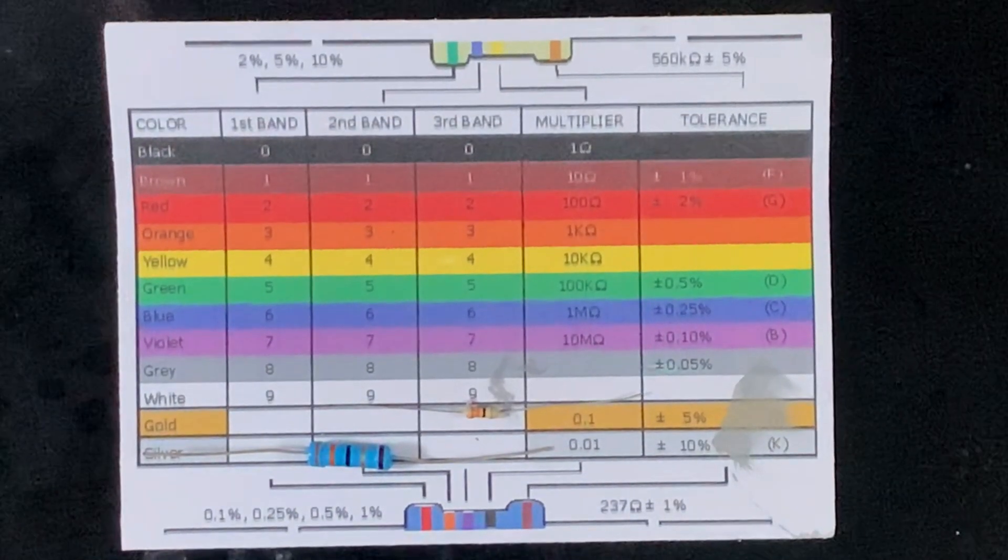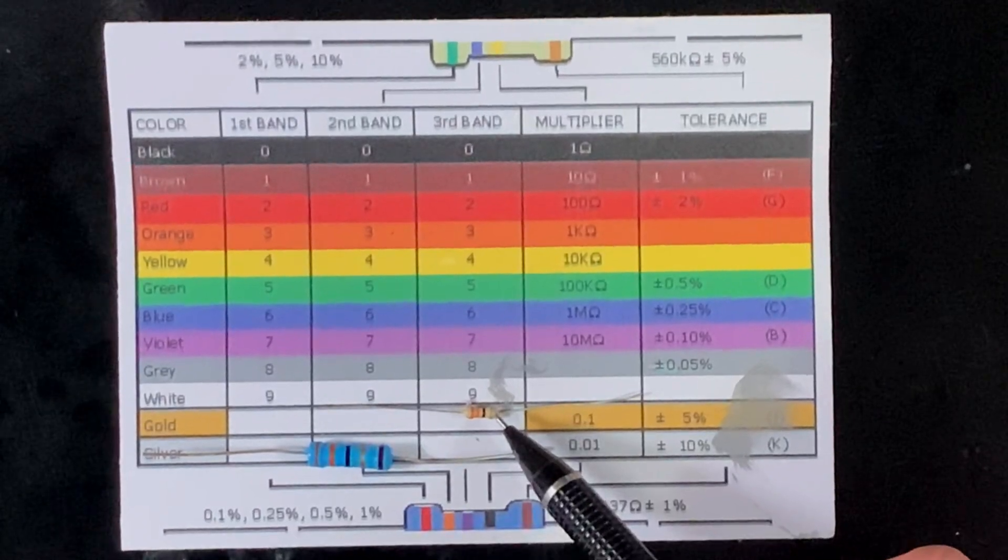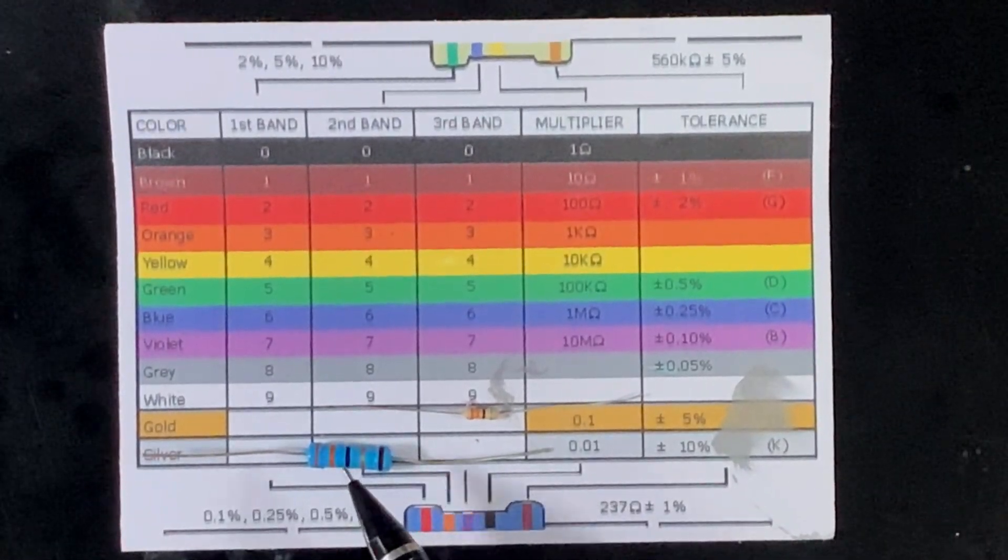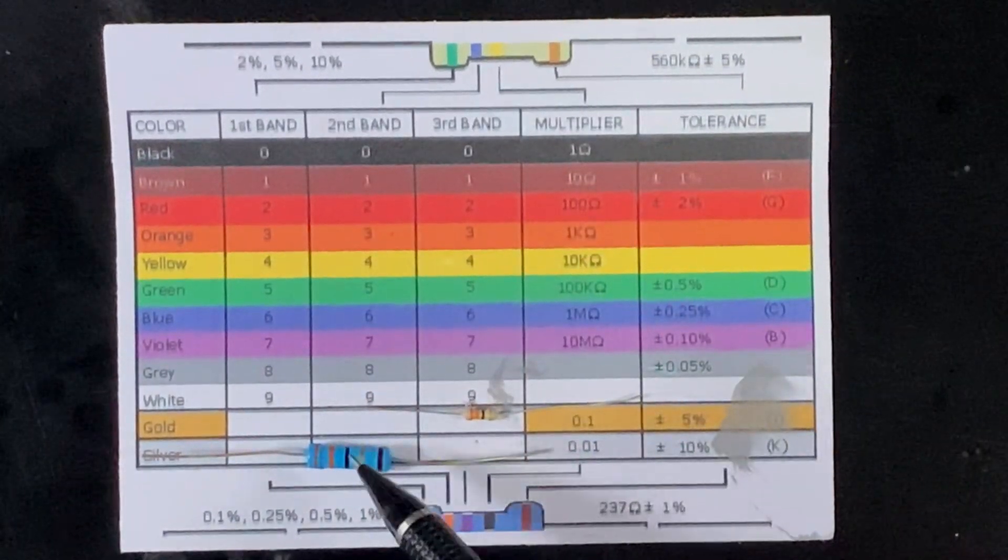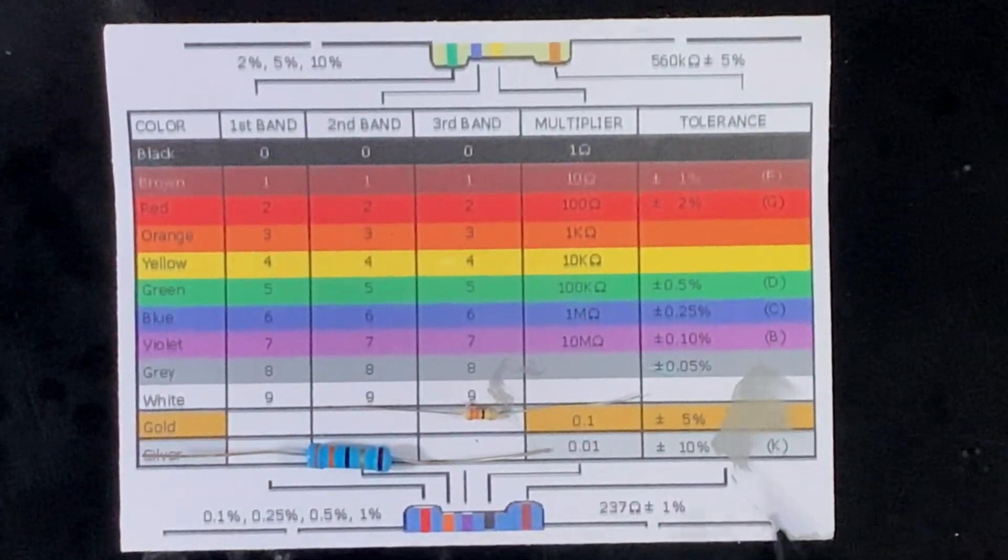So here's two 33 ohm resistors. Resistor values are shown by the color bands. This one here is a 3 watt. This is a quarter watt. The quarter watt has a 4 band code, and the 3 watt has a 5 band code. So I know what you're thinking now. Wait, what?